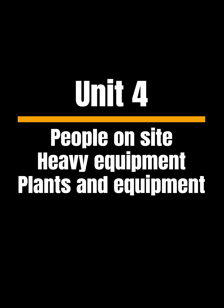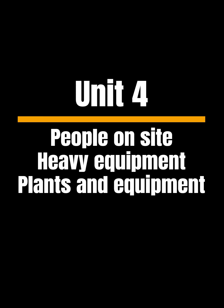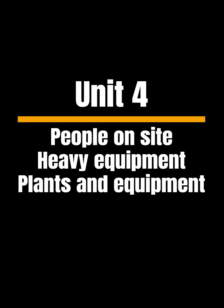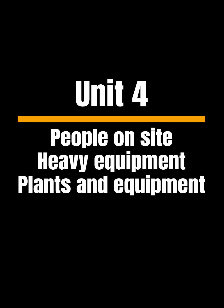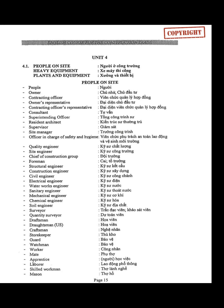Waben English Course for the Construction Trade. Unit 4, section 4.1: People on Site, Heavy Equipment, Plants and Equipment. People on Site vocabulary: Owner, Contracting Officer, Owner's Representative, Contracting Officer's Representative, Consultant, Superintending Officer, Resident Architect, Supervisor.